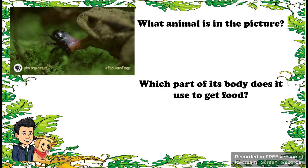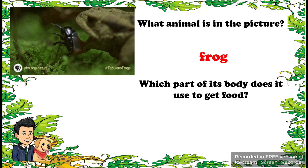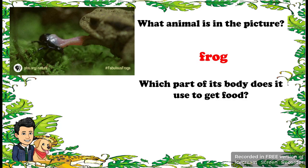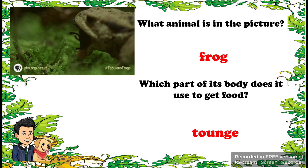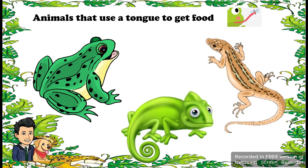One animal is a frog. Which part of its body does it use to get food? The frog uses its tongue to get food. The tongue is one of the body parts of animals. It is long and sticky. Most animals use their tongue to get their food, such as a frog. Animals that use a tongue to get food include frog, lizard, and armadillo.